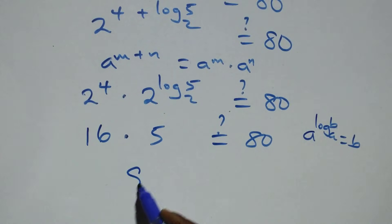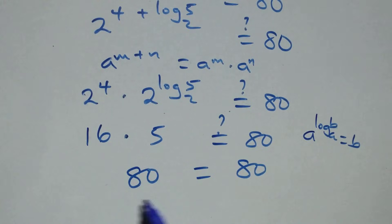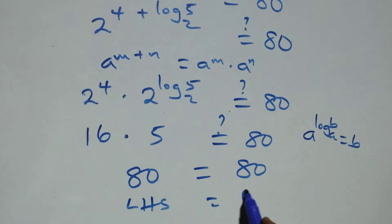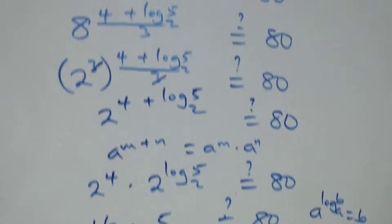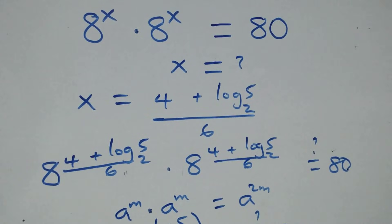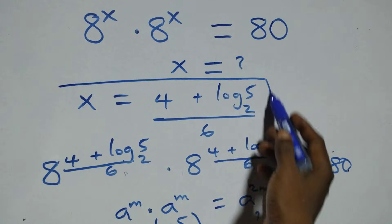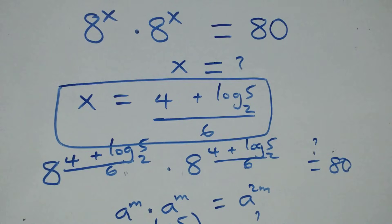Then 16 times 5 is 80, which equals 80 on the right-hand side. Left hand side equals the right hand side. Therefore, we conclude that x equals to (4 plus log₂5) over 6 satisfies the given problem.